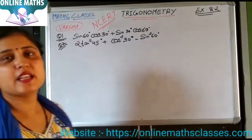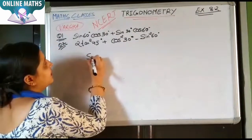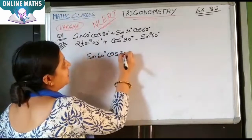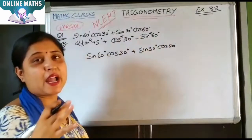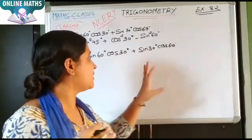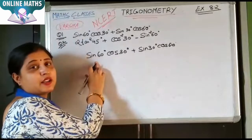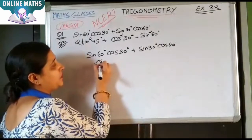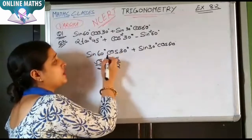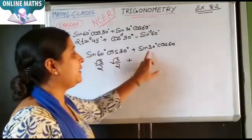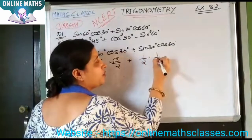Now I am going to start Exercise 8.2, Question 1: sin60·cos30 + sin30·cos60. The value of sin60 is root 3 by 2, cos30 value is root 3 by 2. Between sin60 and cos30 there is multiplication, plus sin30 and cos60. The value of sin30 is 1 upon 2 and cos60 is also 1 upon 2.